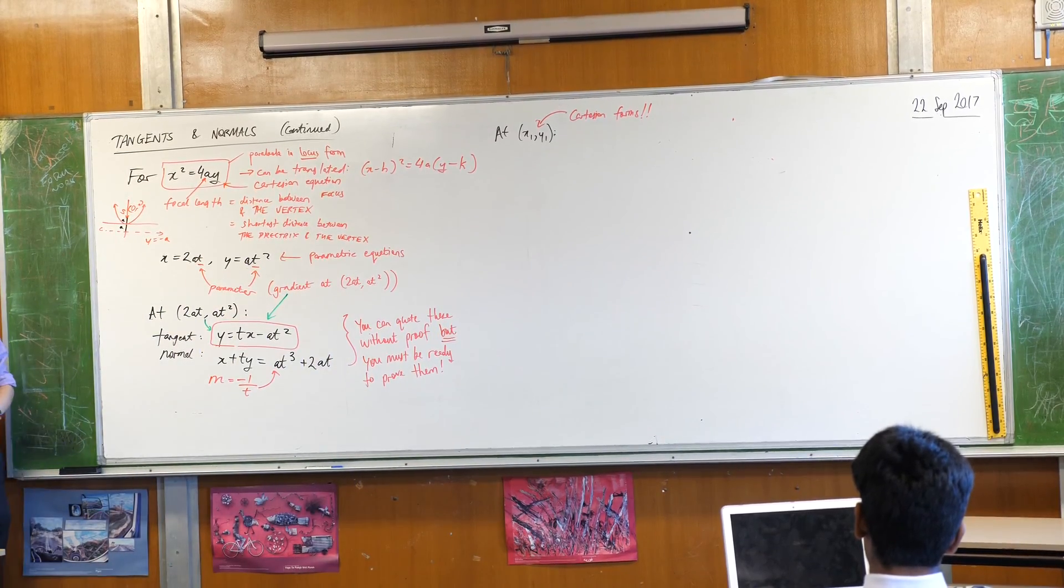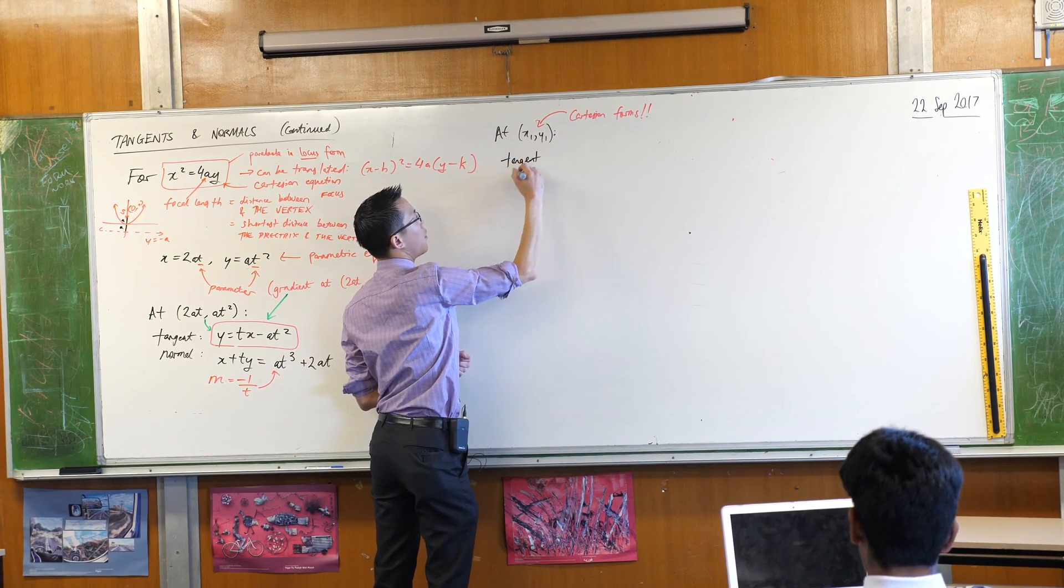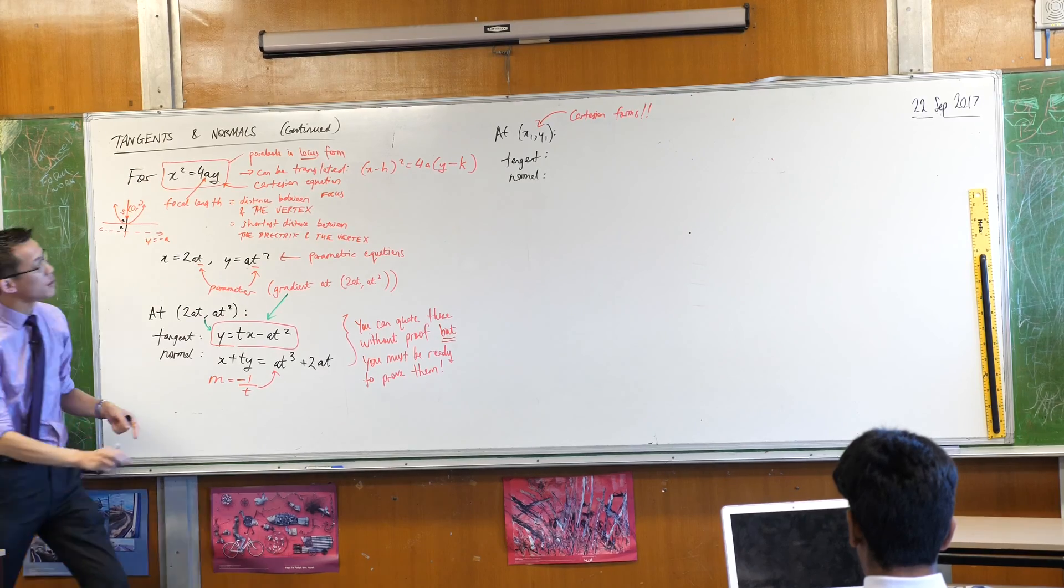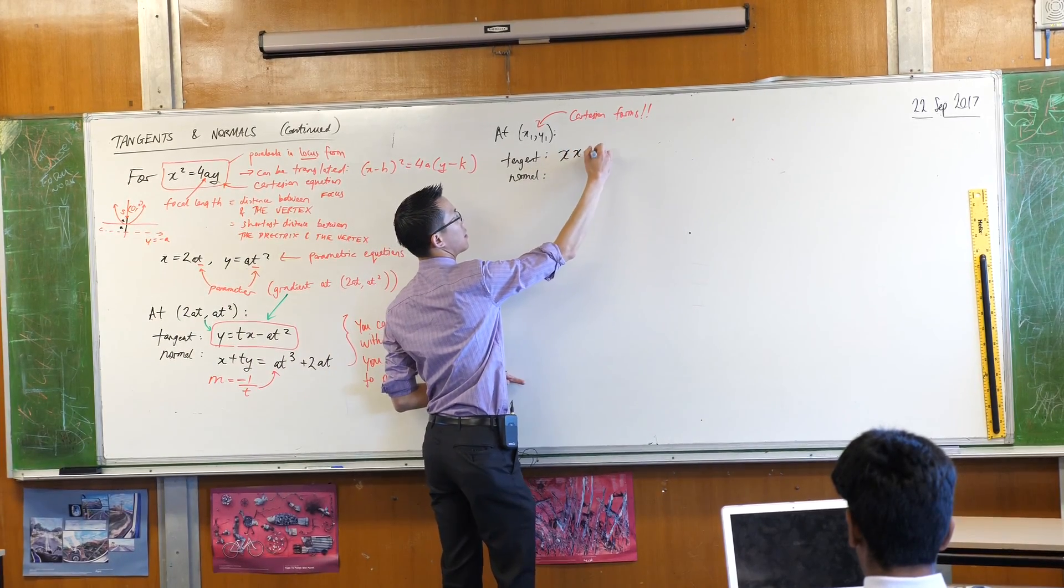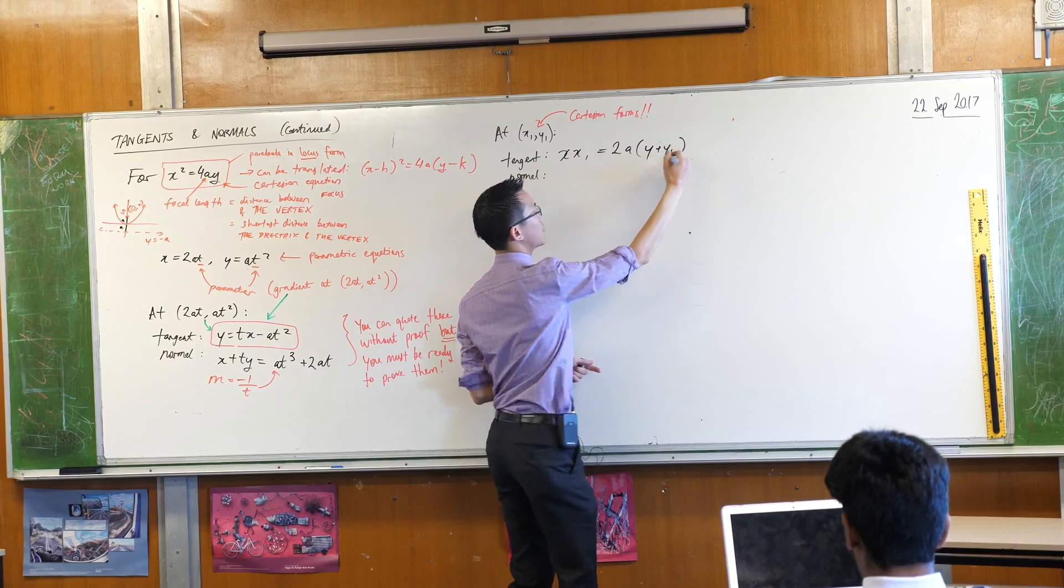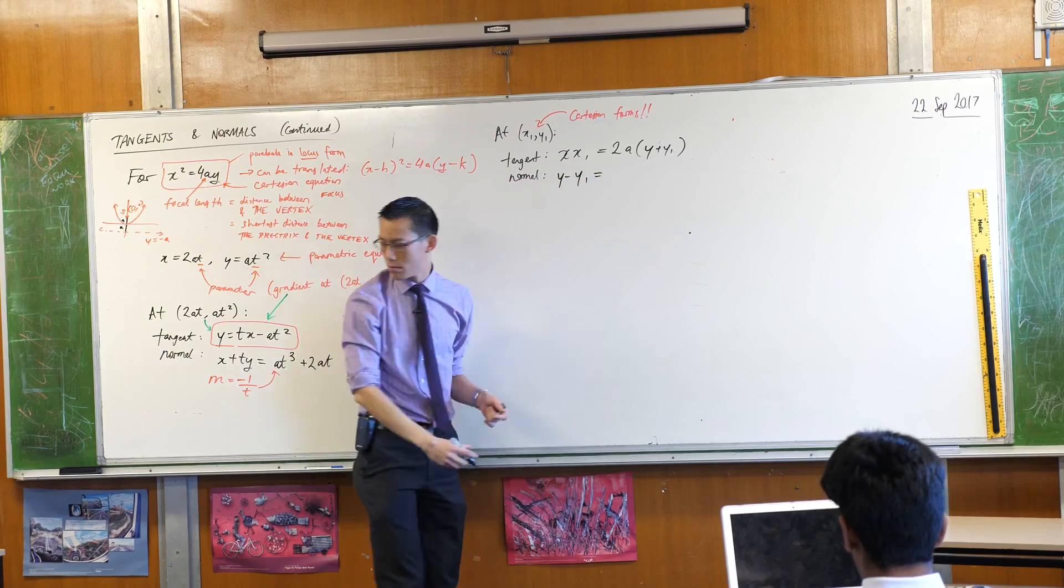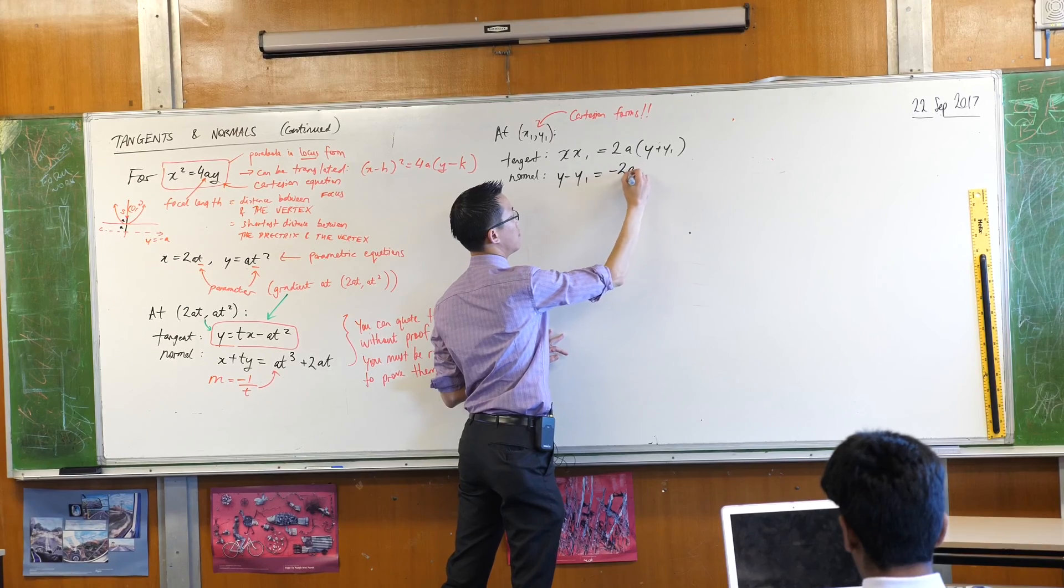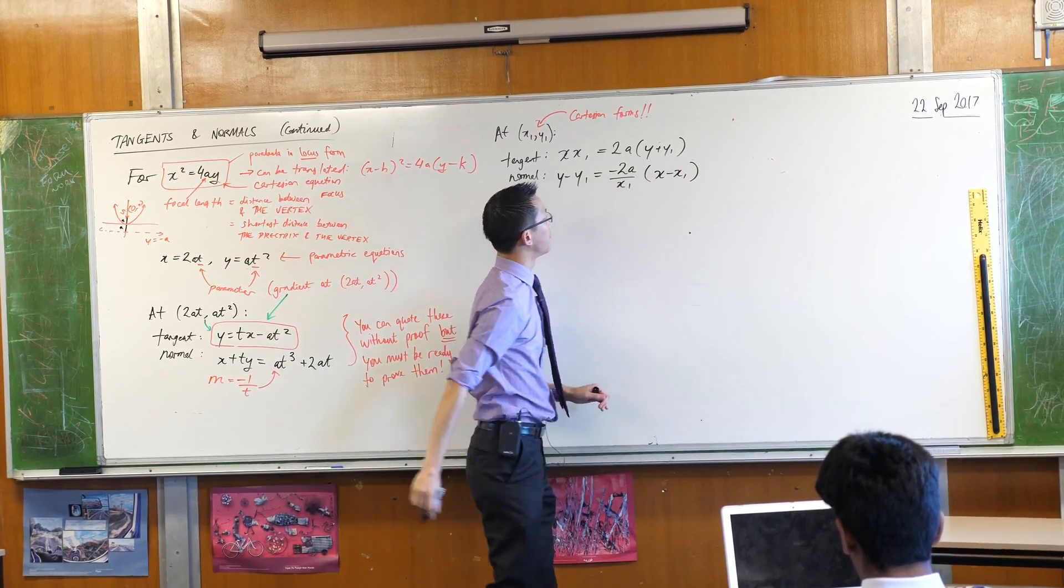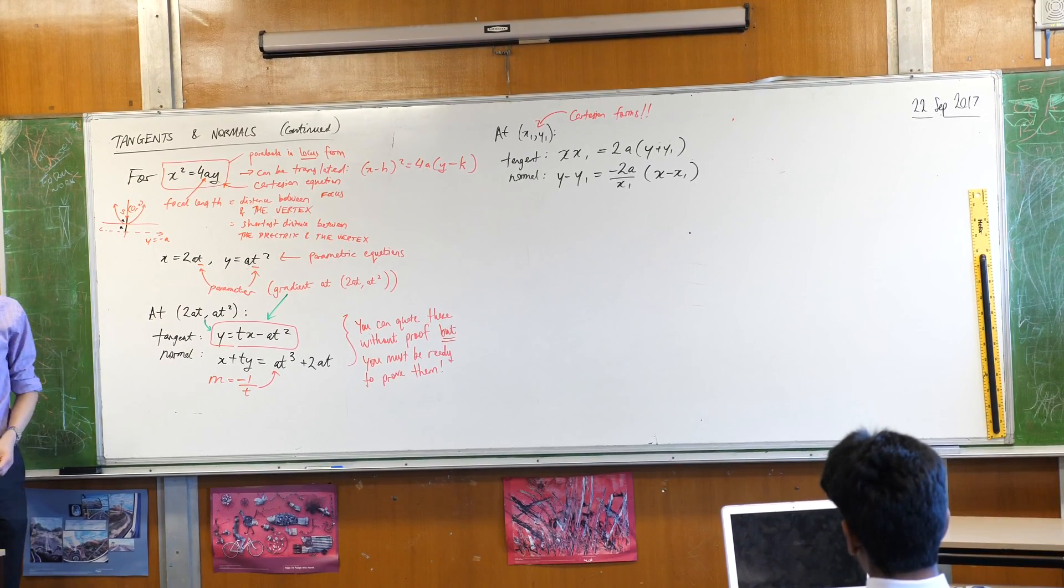So we can still find the equation of the tangent and the normal without the parameter. It's just a little bit trickier. So let's write these results down first. And then what we're going to devote our time to today is to actually proving these results, which ends up being quite ingenious.